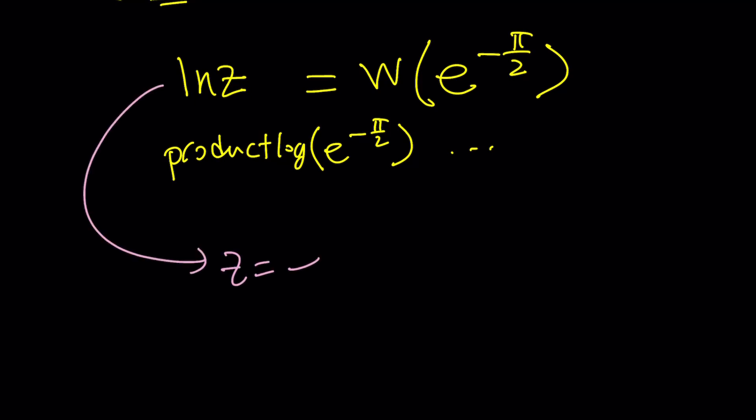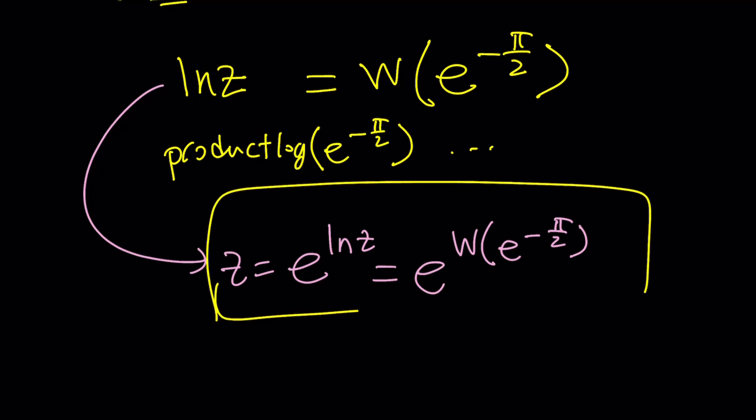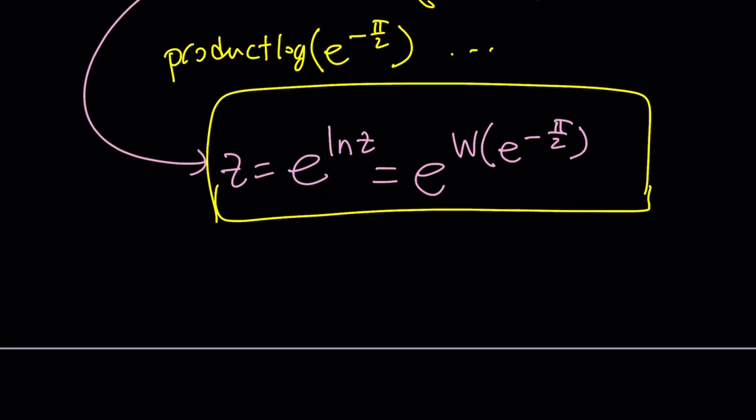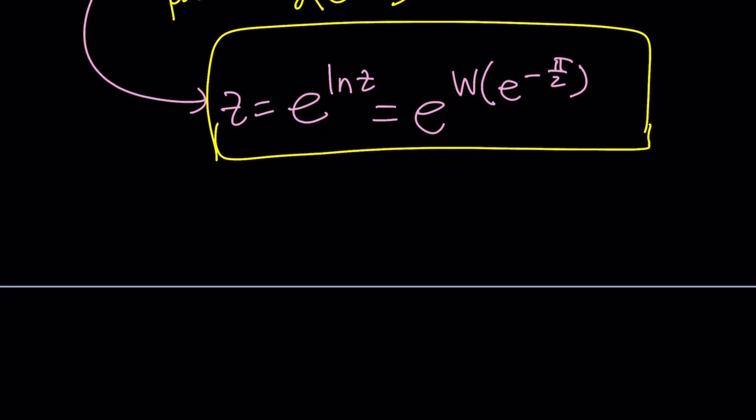z is e to the power ln z but ln z is Lambert's W function of e to the power negative pi over 2. Therefore this is the answer. I know you may not like it like why, how is this useful. Well you can put it into your calculator and obviously there's no algebraic method to solve it unless it's a good number like I told you right. If you Lambert W of 2e squared you get a 2, that's nice, but what happens if you have 2e cubed, it's not going to work like that. So you kind of have to force it right. Lambert it. Anyways hopefully you get the idea.